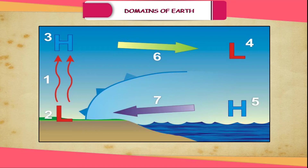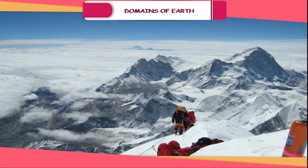The density of the atmosphere varies with height. It is maximum at sea level and decreases rapidly as we go up. Climbers have to carry oxygen cylinders with them to be able to breathe at high altitudes. The temperature also decreases as we go upwards.